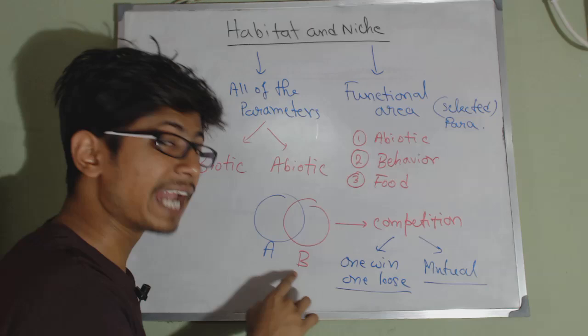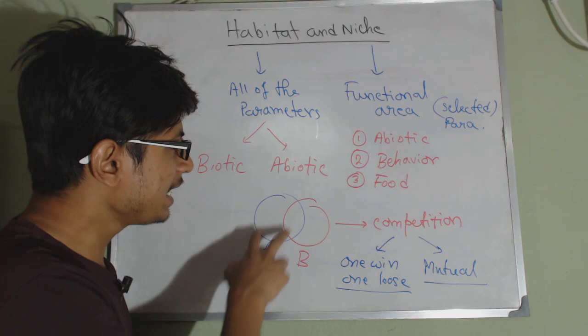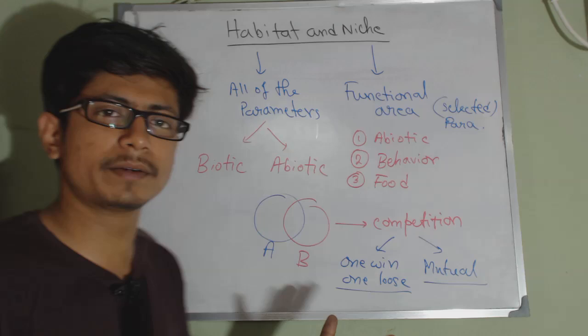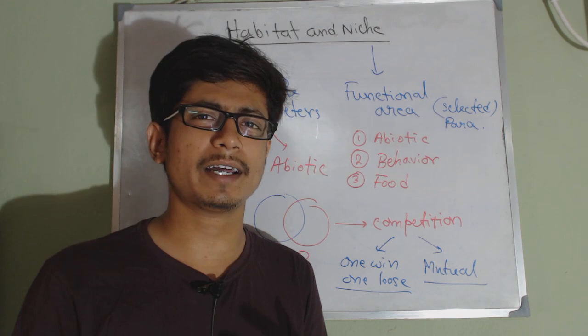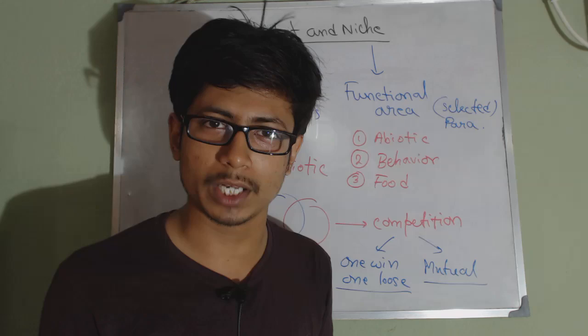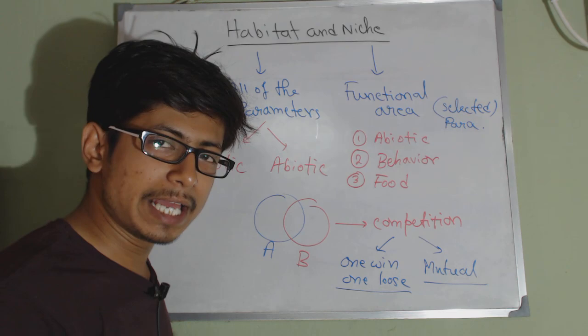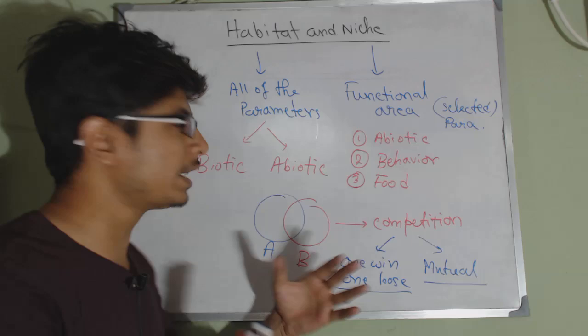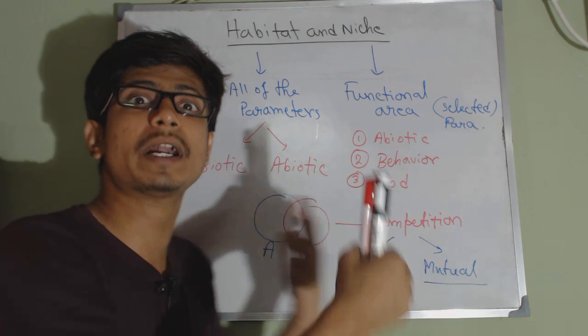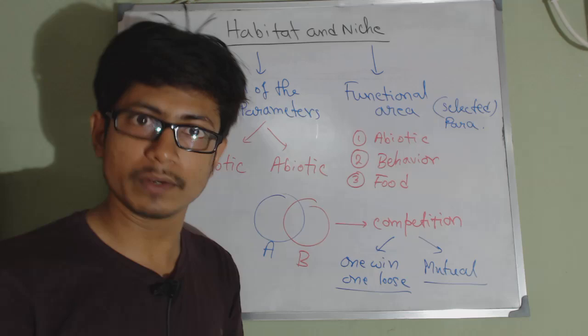So, if we have two different organisms — organism A and B — living together, and they have the same habitat but different niches, say their food habits are different, their required food sources are different, and their behavior is also different, then they won't end up with any kind of competition. But if two organisms living together have the same niche — the same food source, the same behavior, the same abiotic factors required to survive — then they may end up in competition.